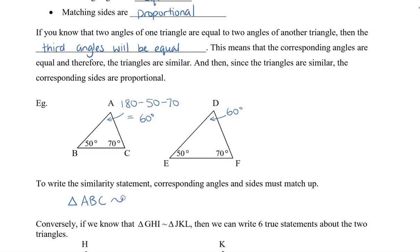We write this as triangle ABC is similar to triangle DEF, using the similar symbol. Now when we write this, we need to match all the angles up. So A is 60 and D is 60, so that is going to be our first letter. Then B is equal to E, so that would be our second letter. And then C is equal to F, and that would be our third letter.